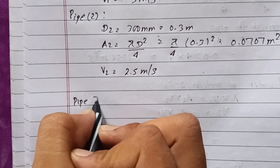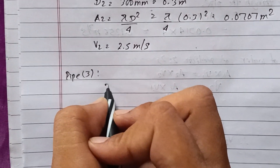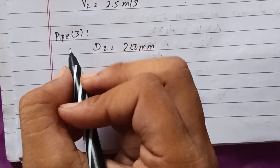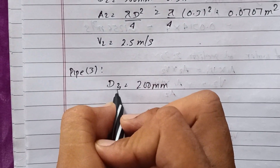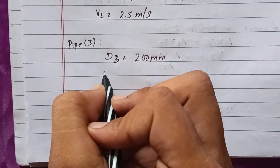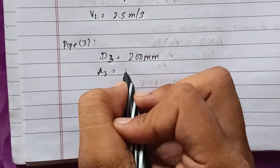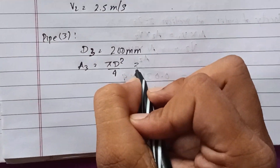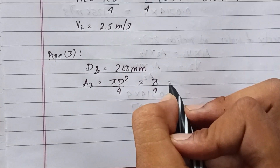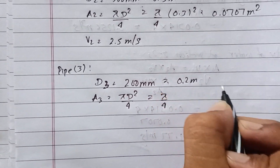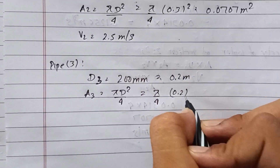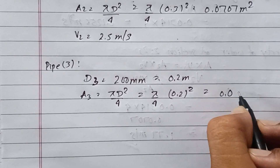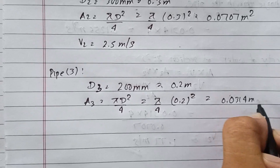For Pipe 3, the diameter D3 equals 200 mm, which is 0.2 meters. The area A3 equals pi times D3 squared divided by 4, which is pi over 4 times 0.2 squared. The answer is 0.0314 meters squared. The velocity V3 is unknown.